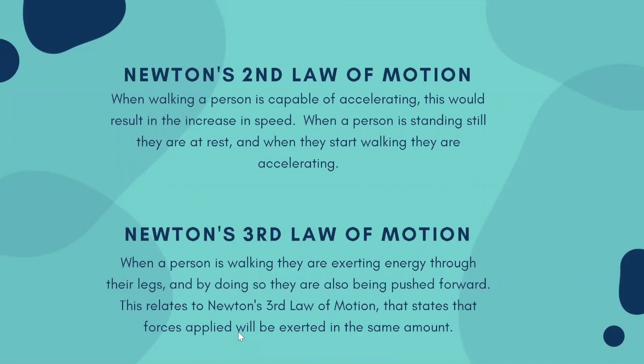In this picture, we are able to see the second law of motion. When a walking person is capable of accelerating, this will result in an increase of speed. When a person is standing still, they are at rest, and when they start walking, they are accelerating. The third law of motion is that when a person is walking, they are exerting energy through their legs, and by doing so, they are also being pushed forward. This relates to Newton's third law of motion, which states that forces applied will be exerted in the same amount.